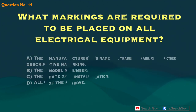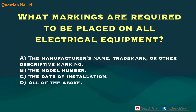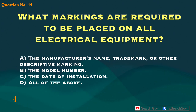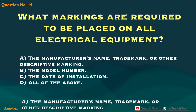Question 44. What markings are required to be placed on all electrical equipment? A. The manufacturer's name, trademark, or other descriptive marking. B. The model number. C. The date of installation. D. All of the above. Answer: A. The manufacturer's name, trademark, or other descriptive marking.